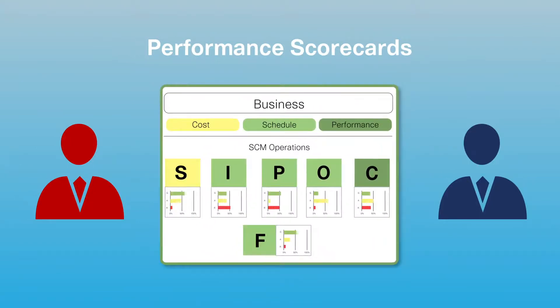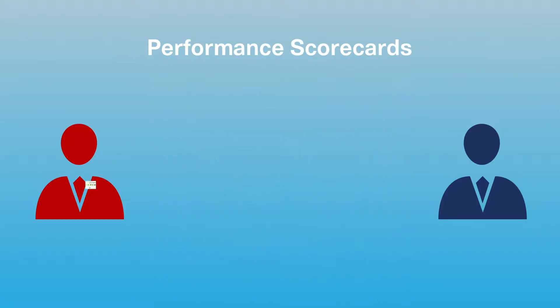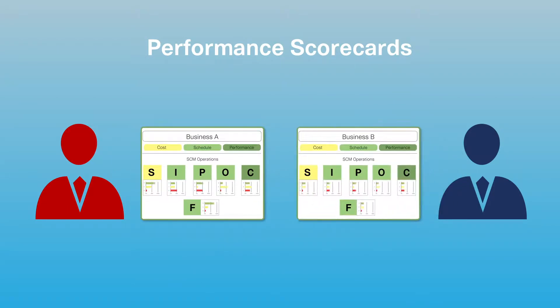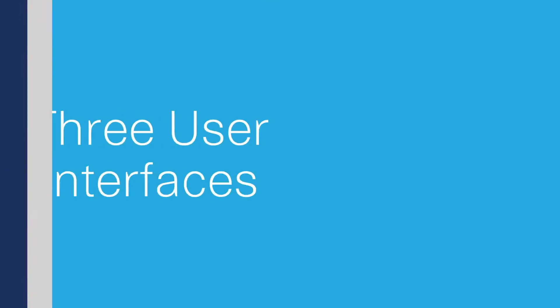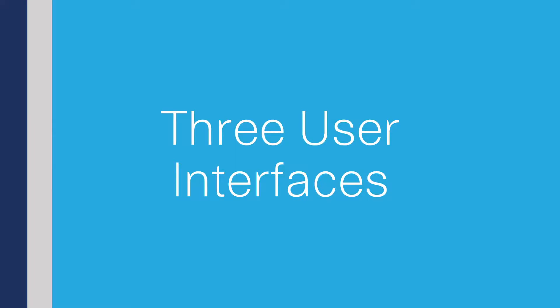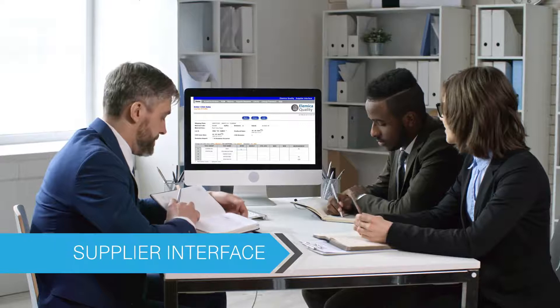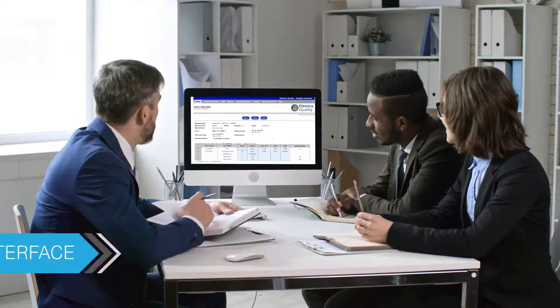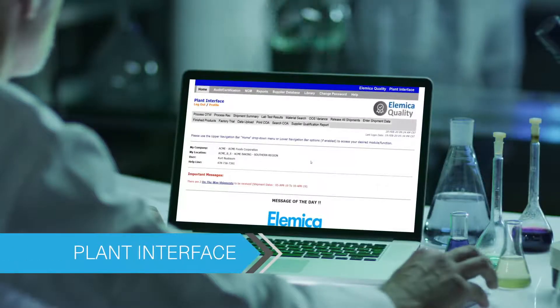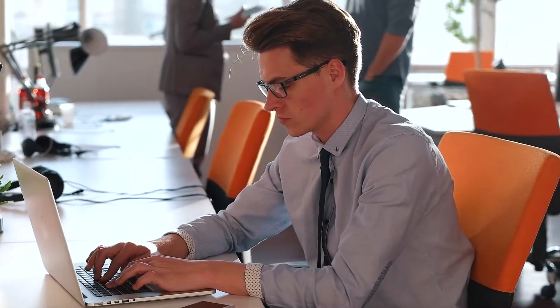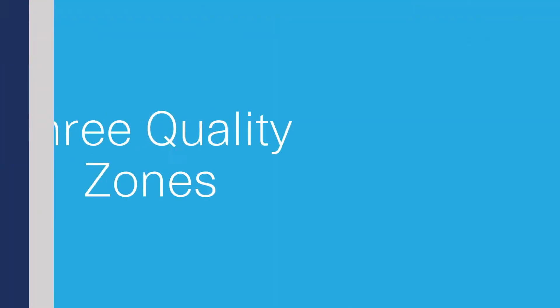The system supports rating and ranking suppliers, looking at how one supplier might perform better for the same material. The system has three different URLs: a URL for the admin interface, a URL for the supplier interface, and a URL for the plant interface — each supporting a different set of functionality.